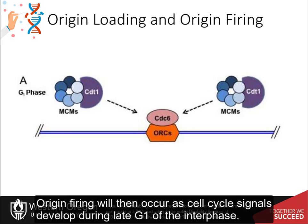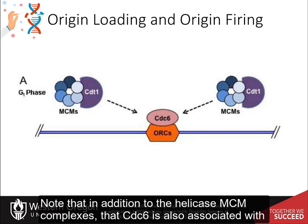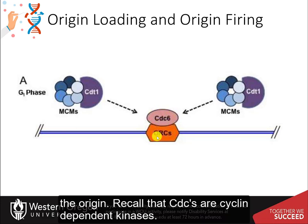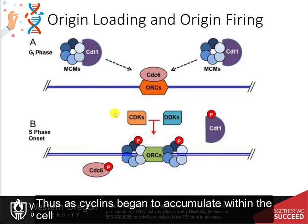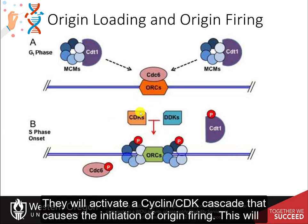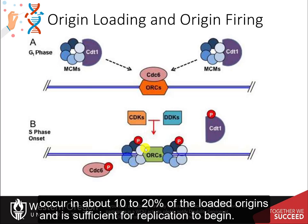Origin firing will then occur as cell cycle signals develop during late G1 of interphase. Note that in addition to the helicase MCM complexes, CDC6 is also associated with the origin. Recall that CDCs are cyclin-dependent kinases. Thus, as cyclins begin to accumulate within the cell, they will activate a cyclin-CDK cascade that causes the initiation of origin firing. This will occur at about 10 to 20 percent of the loaded origins and is sufficient for replication to begin.